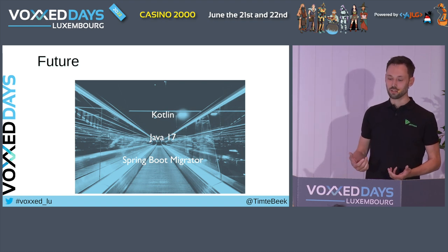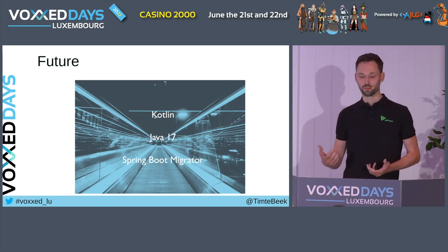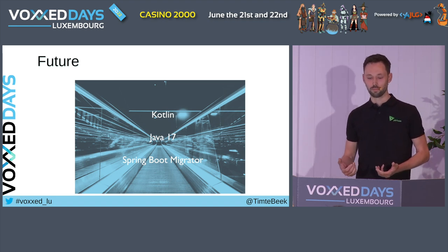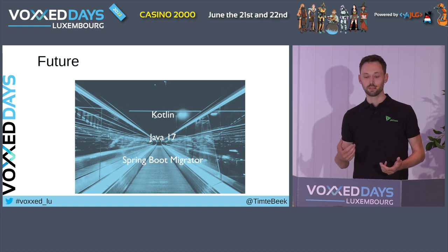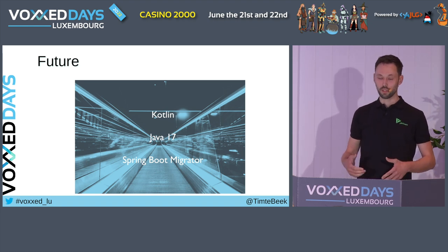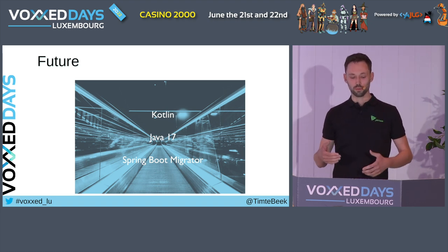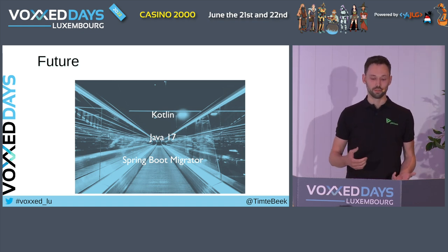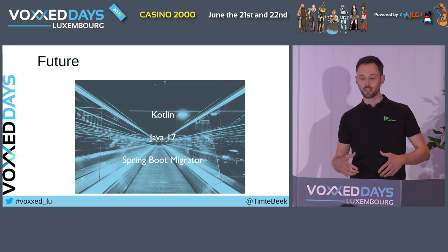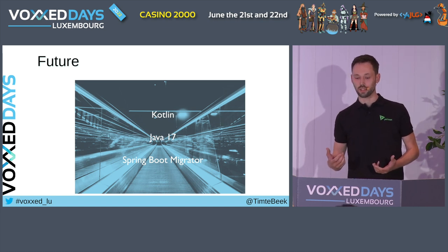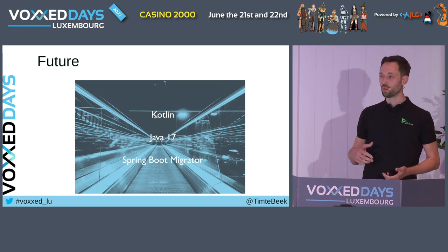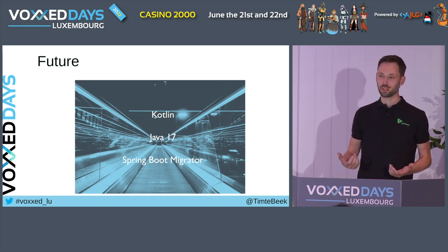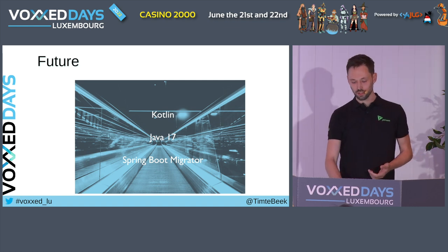The interesting thing about Kotlin is that the Java migration recipes will just work, even though the languages look very different. Another interesting development is the Spring Boot Migrator project. It builds upon Open Rewrite to migrate projects towards Spring from other frameworks. It takes a slightly different, more interactive approach, which will be helpful when Spring Boot 3 comes out in November. All three of these features are in active development, though it's not yet clear when they'll be available.